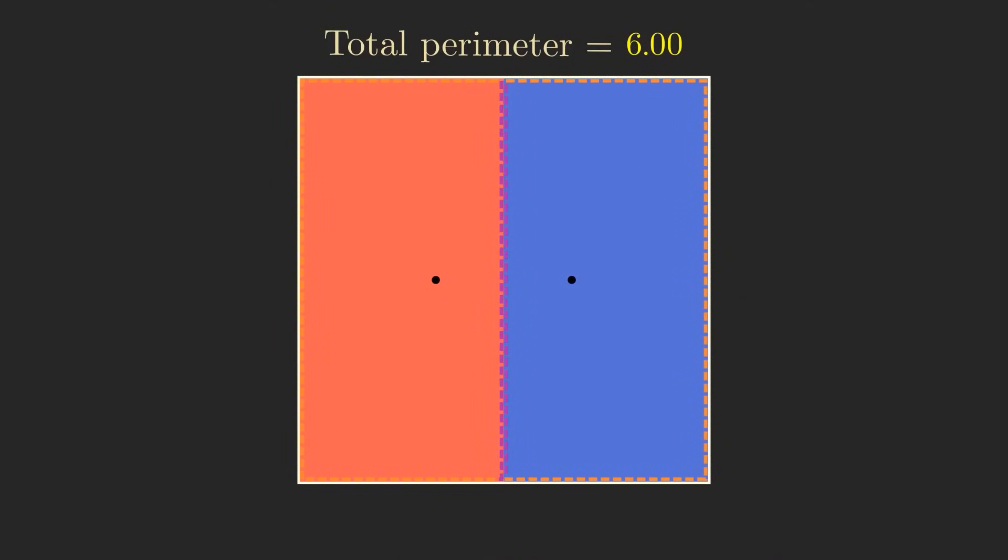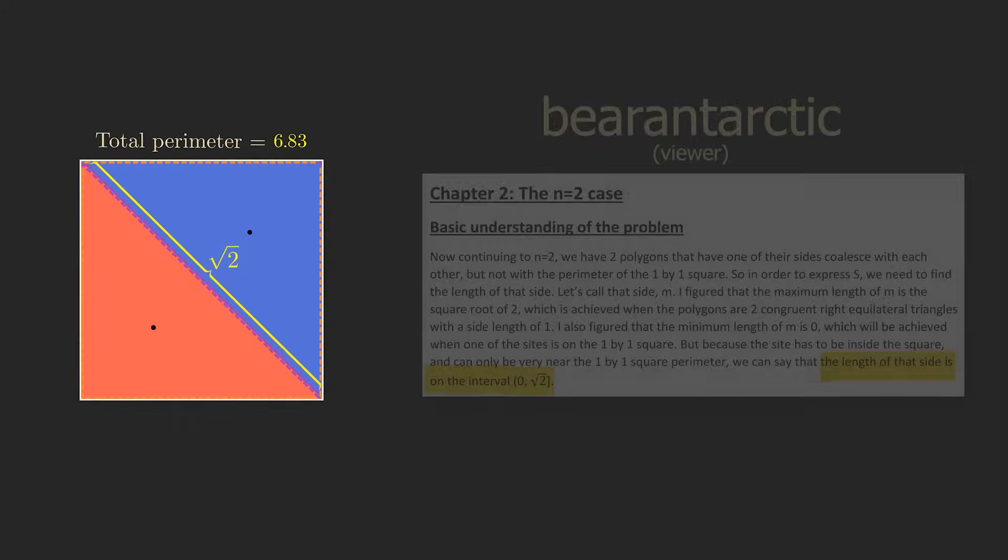here's a diagram where the total perimeter of all the cells is 6. But if we move the sites like this, the total increases to 4 plus 2 square root of 2, about 6.83.